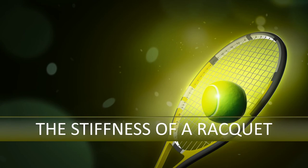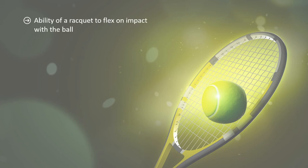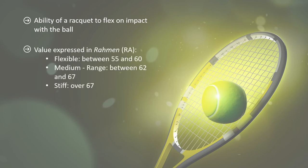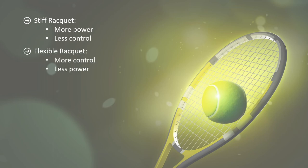Now let's take a look at the stiffness of a racket. The ability of a racket to flex when making contact with the ball corresponds to the flexibility of its frame. Its value is expressed in RA. A flexible racket will have an RA between 55 and 60, a medium range between 62 and 67, and a stiffer racket will be over 67. The stiffer a racket is, the more power it gives and the less control it allows. Conversely, the more flexible it is, the longer the ball stays in contact with the strings, giving more control but less power.